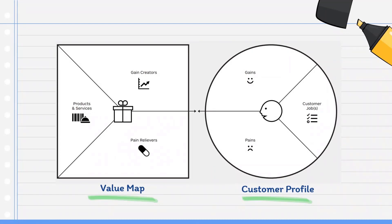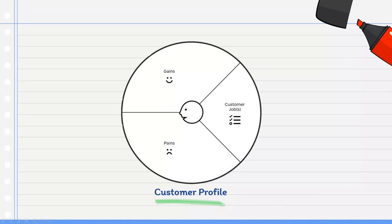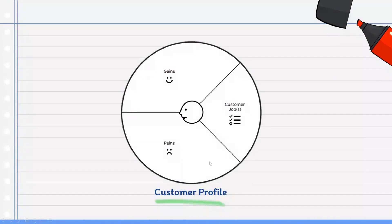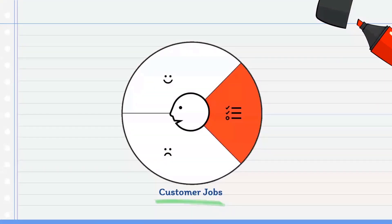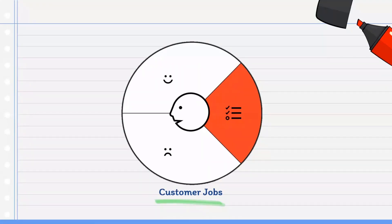Let's start with the customer profile. The customer profile segments your business model into three main things: customer jobs, pains, and gains. For customer jobs, you need to list the key tasks your target customer has to complete — the things your customer is trying to get done in their work. If they are facing any challenge, you need to understand more about their jobs. You can use sticky notes, print the canvas and add it to a whiteboard, or use a digital whiteboard.